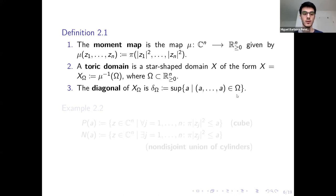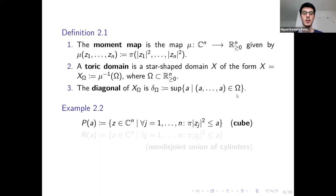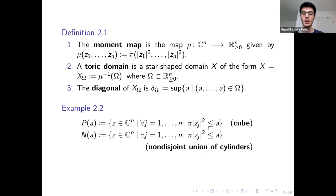Let's look at some examples of toric domains which are going to appear today. First we have the polydisc, which is the set of z's in Cn such that every z_j is bounded. And the non-disjoint union of cylinders, which is the set of z's in Cn such that one of the z_j is bounded.